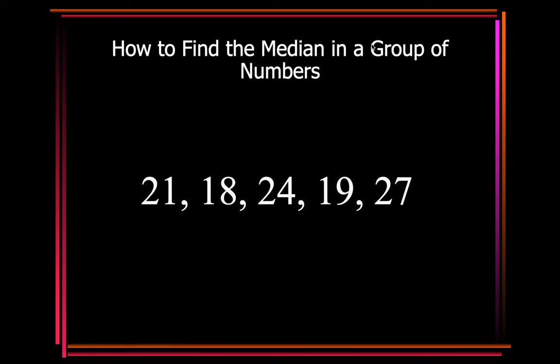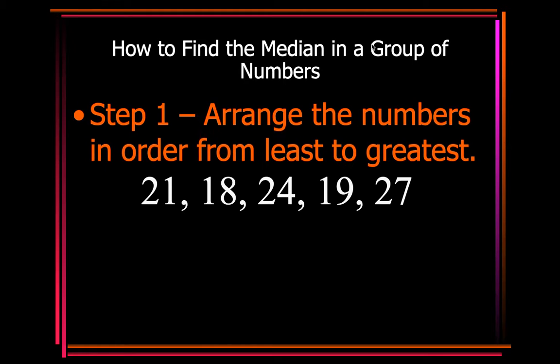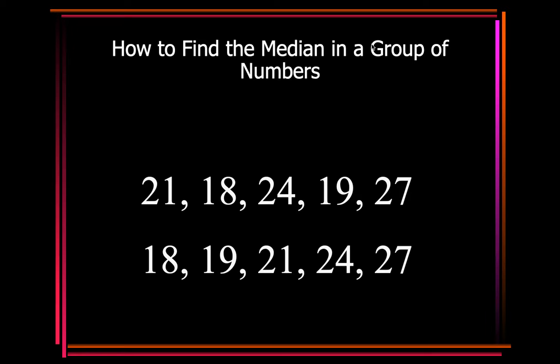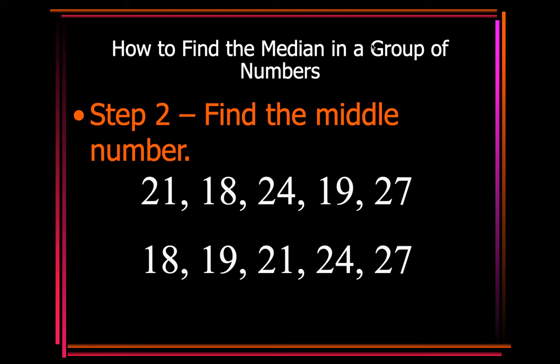All right, so if you had to find the median of this group of numbers, what's the very first thing you need to do? Put them in order from least to greatest, which is right there, 18, 19, 21, 24, and 27. Find the number in the middle. So you cross off the 18, the 27, the 19, the 24, and you are left with 21.